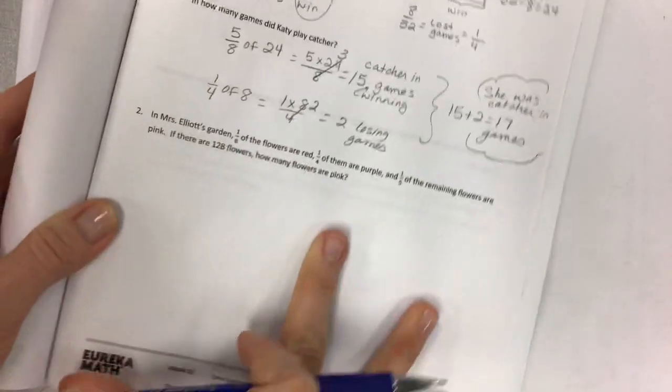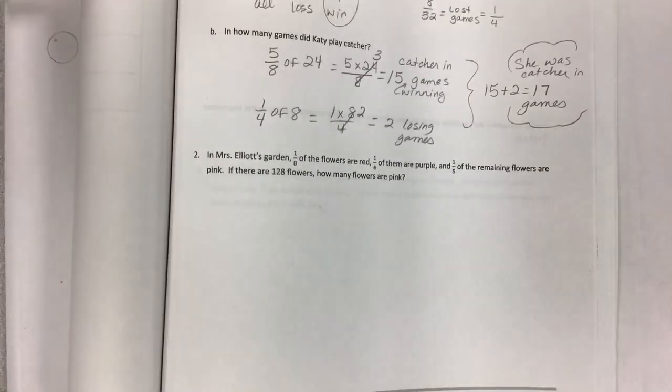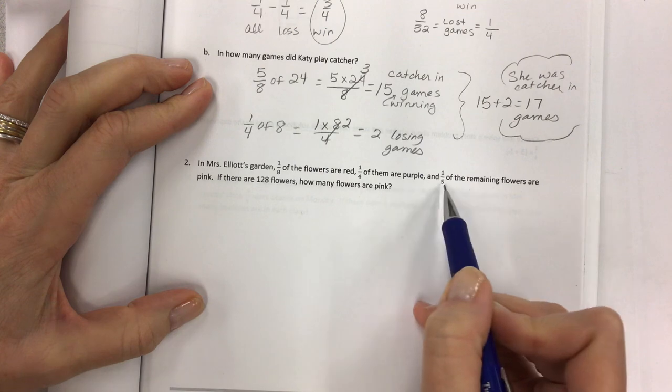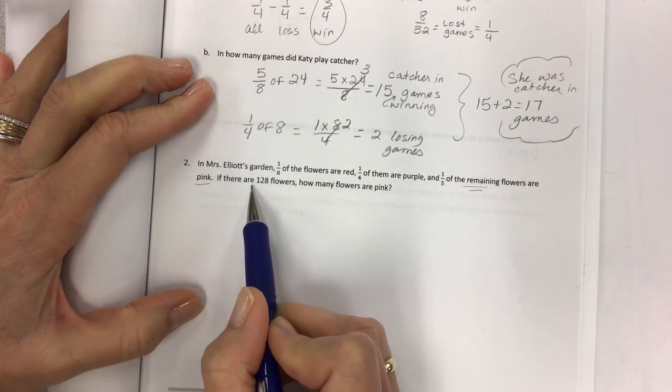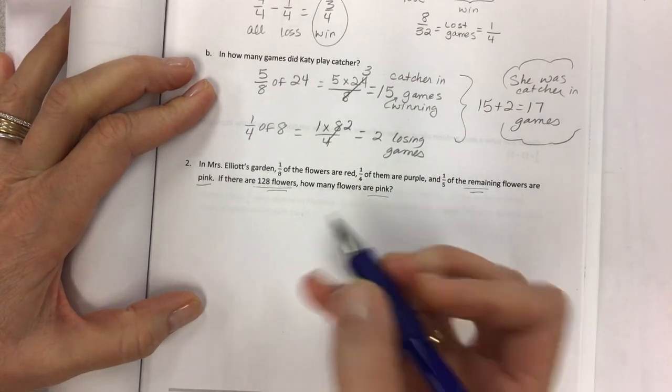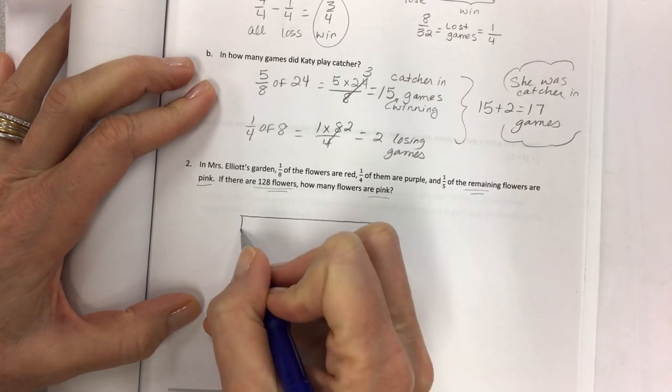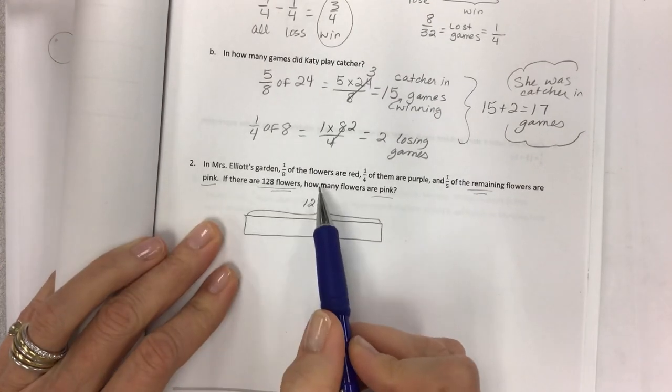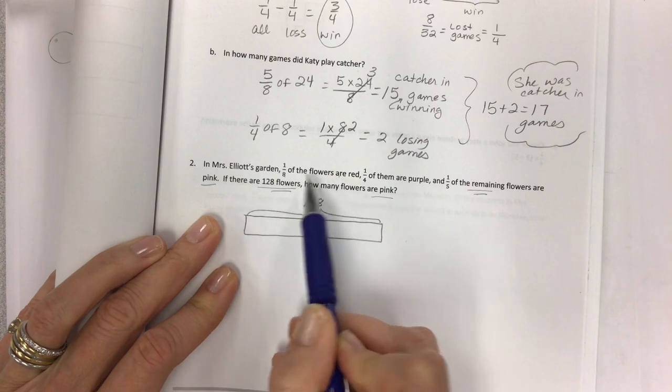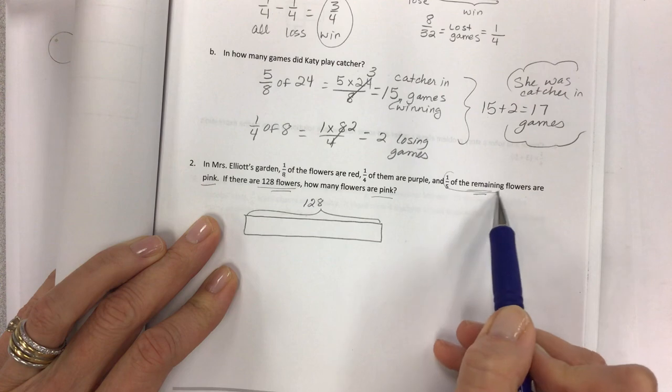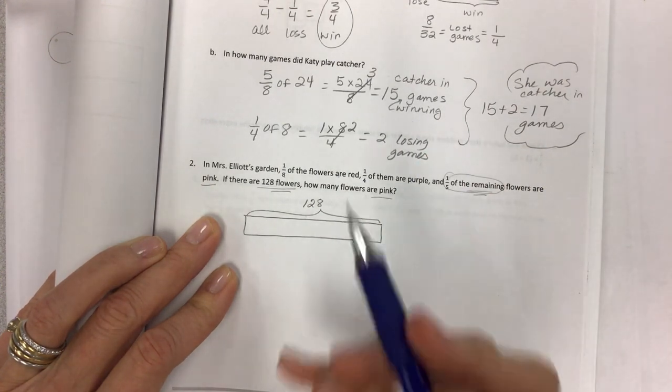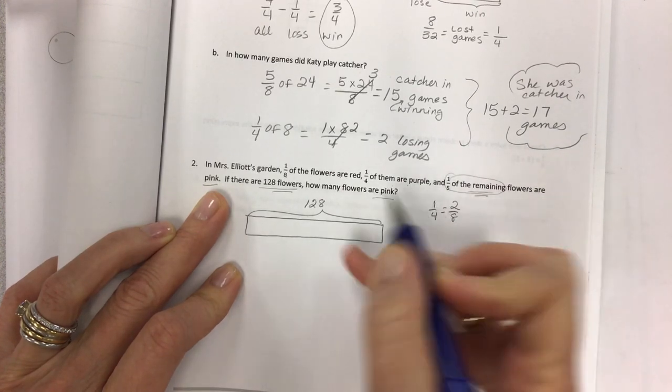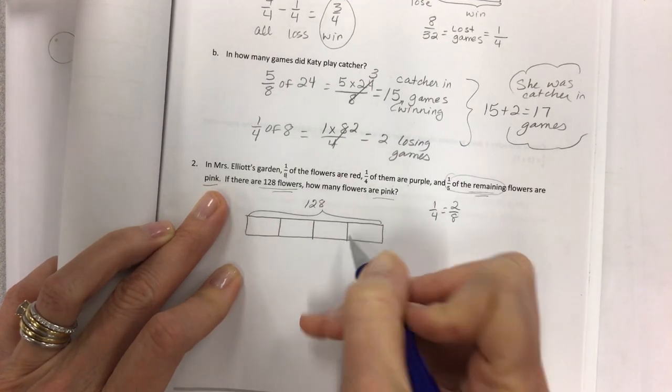Now the next one, I have to kind of hold my book, push it up. In Mrs. Elliott's garden, 1/8 of the flowers are red, 1/4 of them are purple, and 1/5 of the remaining flowers are pink. If there are 128 flowers in all, how many flowers are pink? Let's make a tape diagram so we can show different colors. 128. And for sectioning it off, we've got some clear-cut colors and fractions.